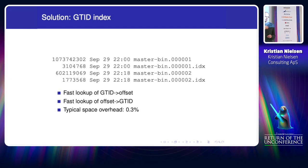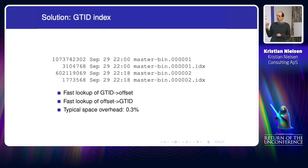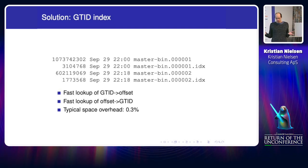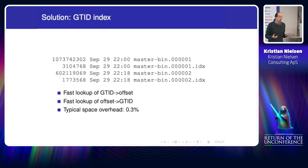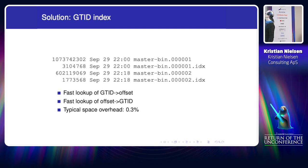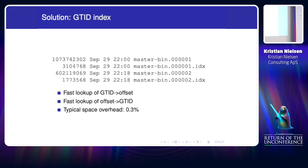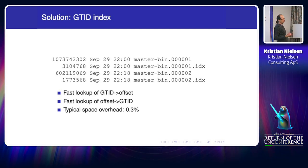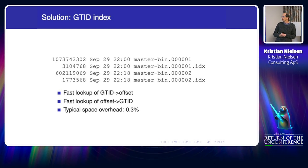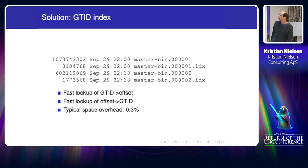You can also look up in the other direction — given a binlog file position, find the corresponding GTID. This is used when a slave connects after an upgrade: it connects with a file/offset position, then finds the corresponding GTID position. This makes it trivial for the user to switch to GTID. The space overhead is an extra file of about 3 MB for a 1 GB binlog — roughly 0.3% — which I think is very reasonable.